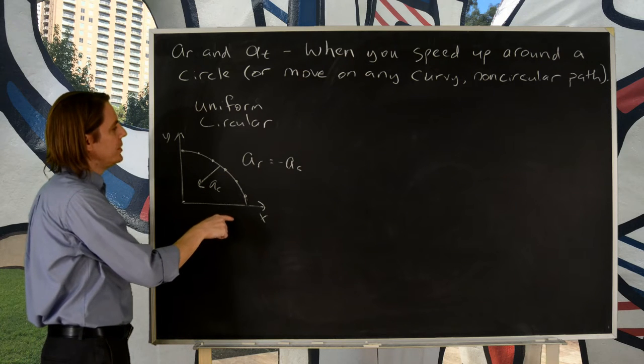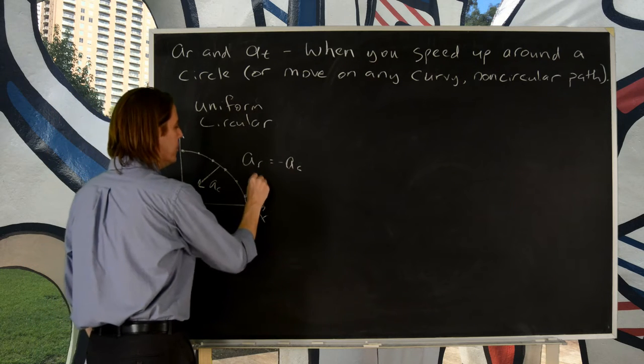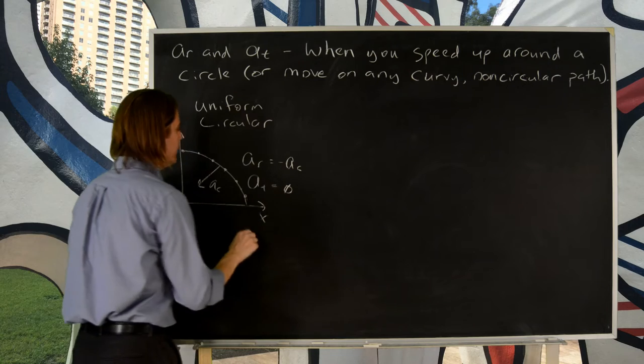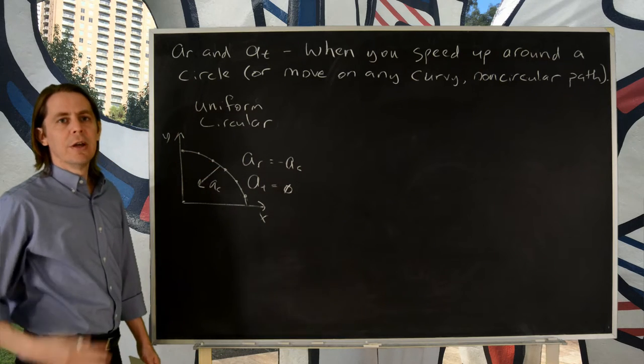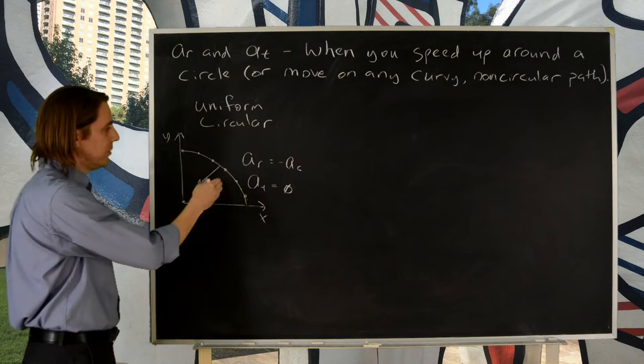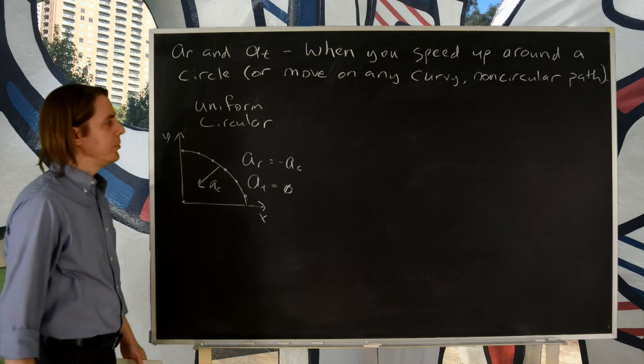If you wanted the tangential acceleration, well, that would be zero for uniform circular motion, because tangential is how much it's speeding up along the curve. And uniform circular motion means the speed is constant. So, we don't worry about it.